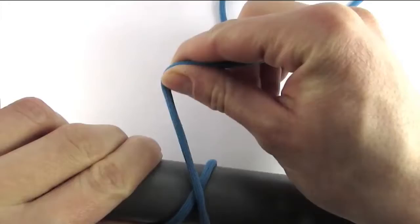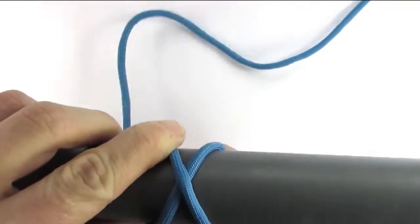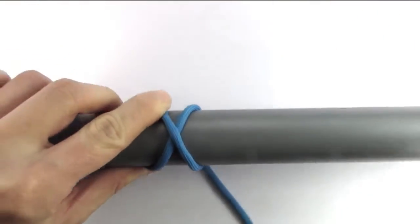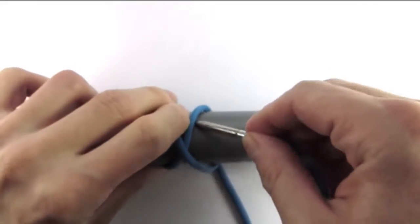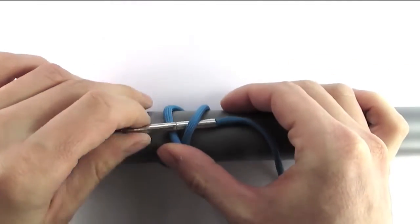We're going to start by wrapping the cord in an X shape twice around the mandrel, then go under over with our working end.